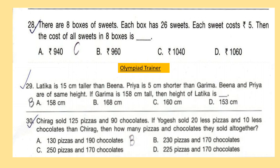Question 30: Chirag sold 125 pizzas and 90 chocolates. If Yogesh sold 20 less pizzas and 10 less chocolates than Chirag, find the total number of pizzas and chocolates they sold altogether.